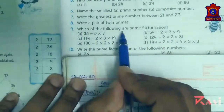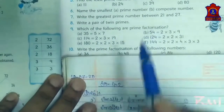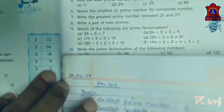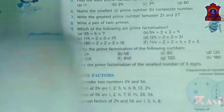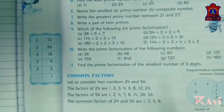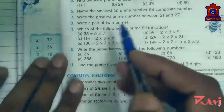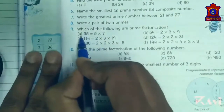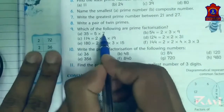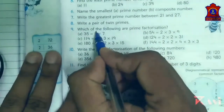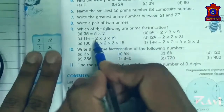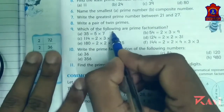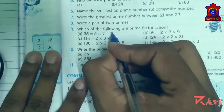Next question: which of the following are prime factorizations? To check, look at the factors carefully. Factors of 35 are 5 and 7. Here 5 is also a prime number and 7 is also a prime number. So the answer is yes.